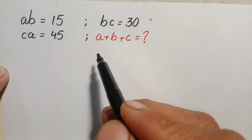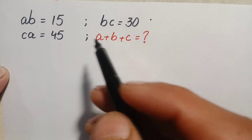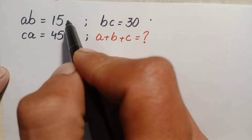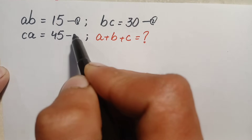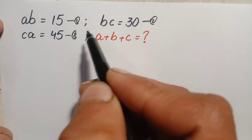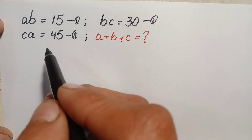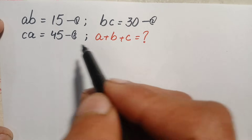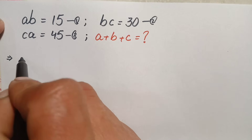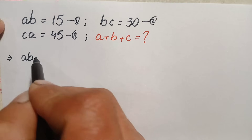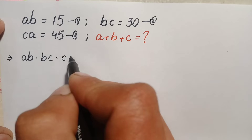First of all we will try to find out the values of a, b, and c individually and then add them up. Let us label these as equation number one, equation number two, and equation number three. We will multiply the left-hand sides of all three equations together and also multiply the right-hand sides together. The left-hand side product gives us a·b times b·c times c·a.